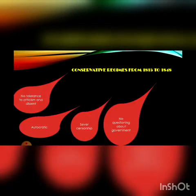The next topic is the conservative regime from 1815 to 1848. The first point is no tolerance to criticism and dissent. During the conservative era, the monarchical government as well as the church did not allow any person to question the legitimacy of the government or any decision imposed upon the people. Any criticism or argument against the monarchical government or the church was considered a punishable offence.